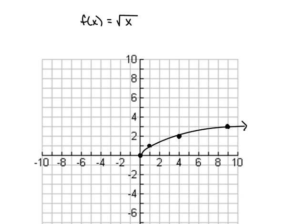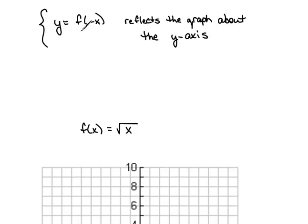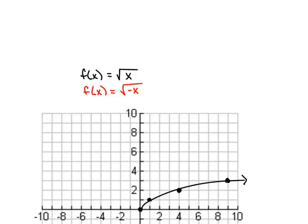Okay, now, according to our definition up here, it said we're talking about making the x value itself negative. So to show a reflection about y, I would need to graph now the square root of negative x.